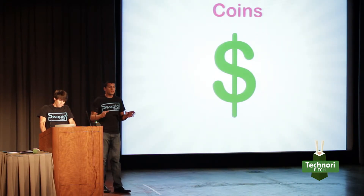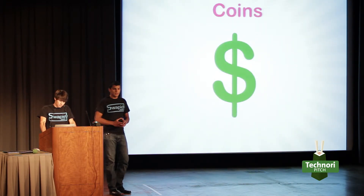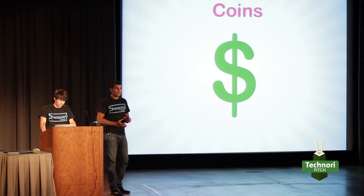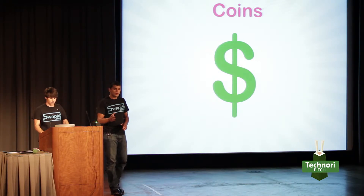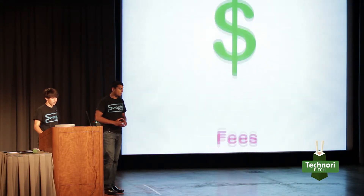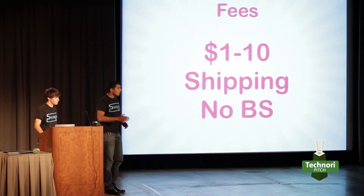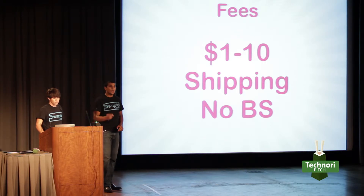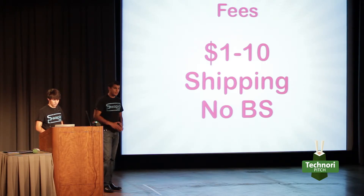In Swappity, we have a very unique coin system that's built in. The coin system adds value to a trade and coins have a dollar value within the site. You can add coins to a trade and use those coins for future negotiations, as well as redeem them for cash. Our fee structure is the lowest in the market — we charge a dollar to ten dollars plus shipping, and that's it. No BS.